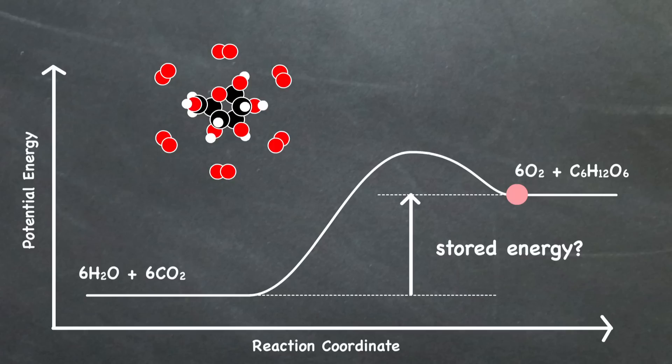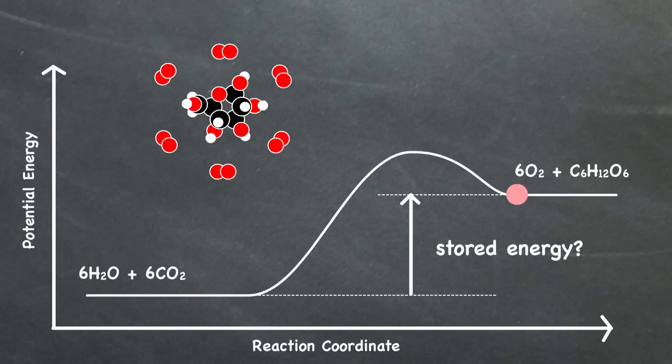Why does this glucose exist? Do we consider it to have stored energy with respect to the products of the reaction, or do we consider it to have lost energy from some arbitrary transition state? Once again, both views are technically correct, so it seems odd to argue between them.